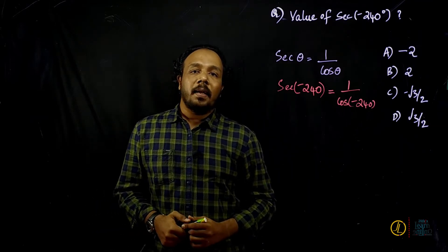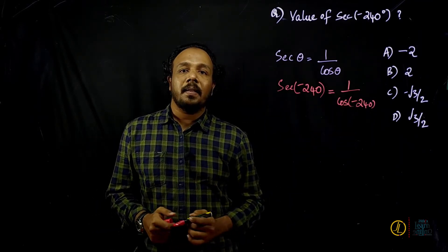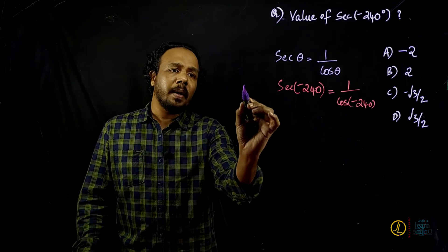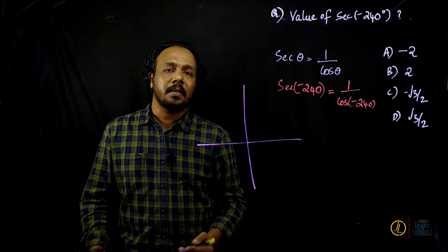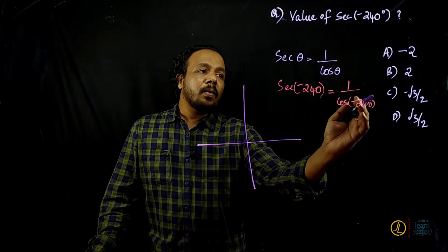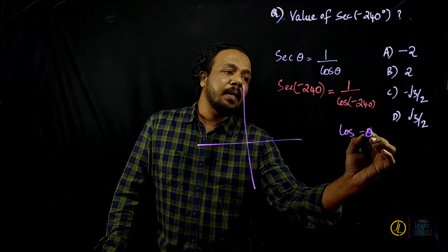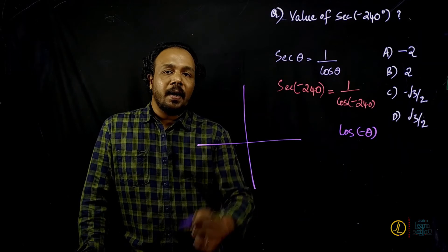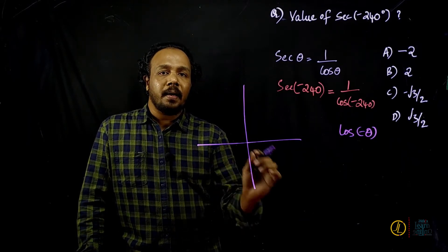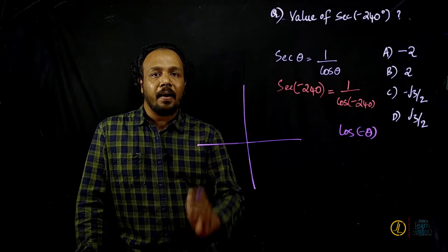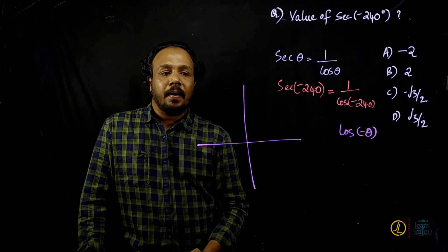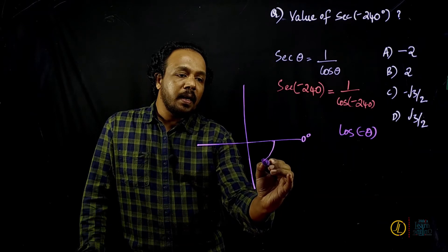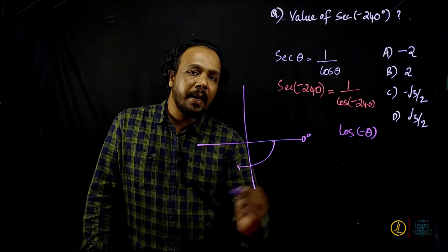For cos(−240°), this involves a negative angle. We use the property cos(−θ) = cos(θ). A negative angle means we measure clockwise on the graph, while a positive angle is measured counter-clockwise. So we need to find the corresponding positive angle.